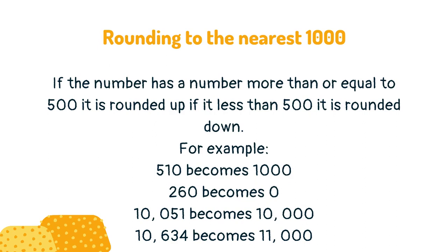If the number has a number more than or equal to 500, it is rounded up. If it is less than 500, it is rounded down.